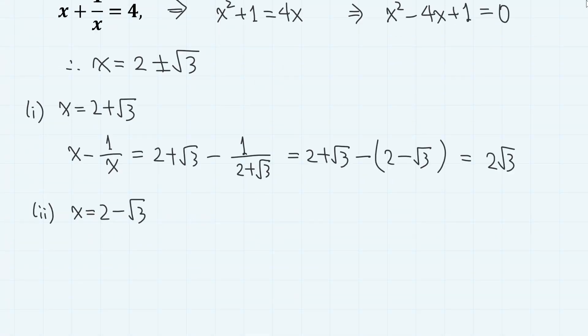When x equals 2 minus square root of 3, then x minus 1 over x equals 2 minus square root of 3 minus 1 over 2 minus square root of 3. By rationalizing the denominator, this part is 2 plus square root of 3. So we have minus 2 square root of 3.